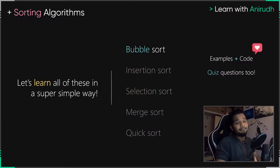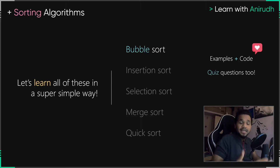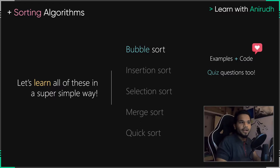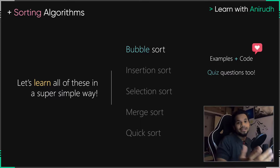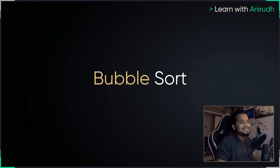To help you guys understand bubble sort, we're going to have multiple examples that we're going to discuss step by step, and we're going to recap how the entire algorithm works. We're going to go to Colab and take a look at the Python code — it's a very simple piece of code. Eventually after that, we're also going to have a quiz question where you guys can sort on your own and head to the comment section to give me your answers.